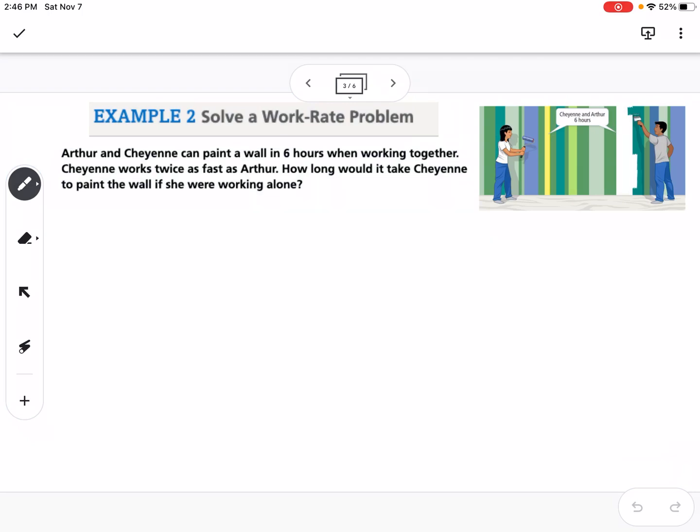Okay, so example 2 is solving a work rate problem. It says Arthur and Cheyenne can paint a wall in 6 hours when working together. Cheyenne works twice as fast as Arthur. How long would it take for Cheyenne to paint the wall if she were working alone? The way we want to set these up is we want to always have our items on the top and the time on the bottom. So we're going to do walls over hours, and we're going to set up, we know that Cheyenne plus Arthur equals together. So together, we know they can paint one wall in 6 hours, so we can set up that fraction. Now, here's the part that can be a little bit confusing. We know that Cheyenne works twice as fast as Arthur. So let's say that Arthur can paint one wall in x hours.